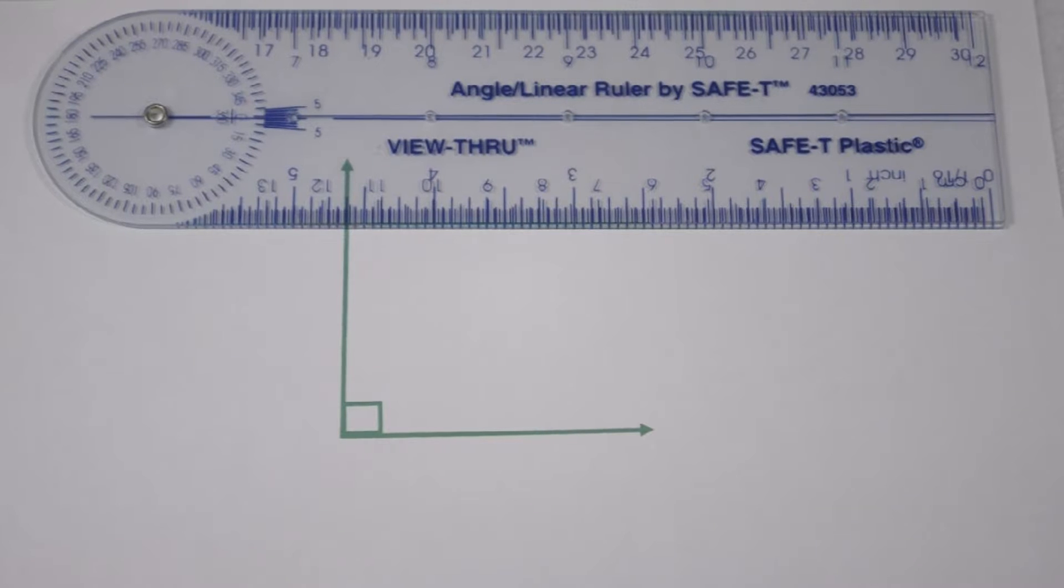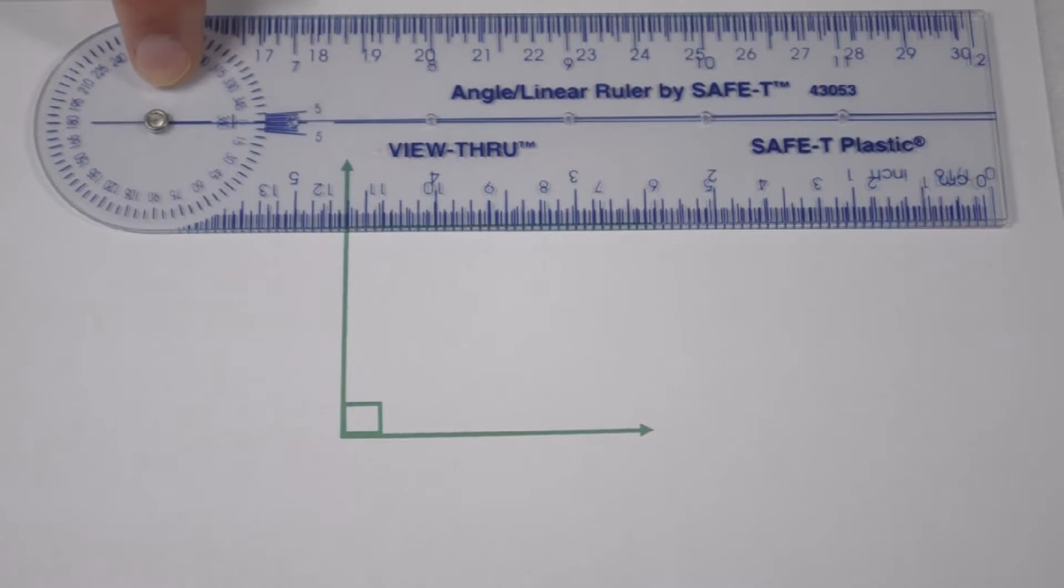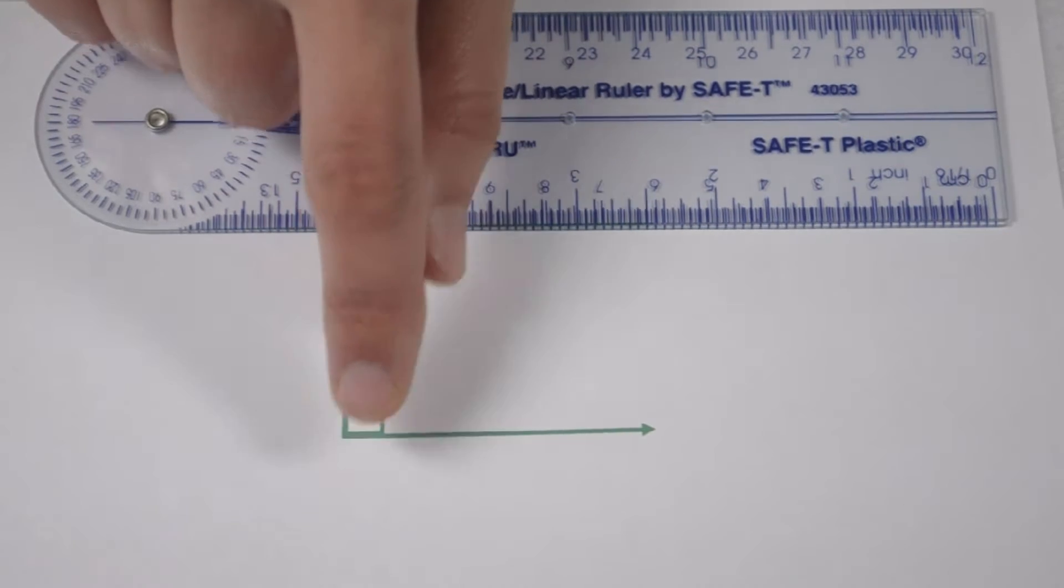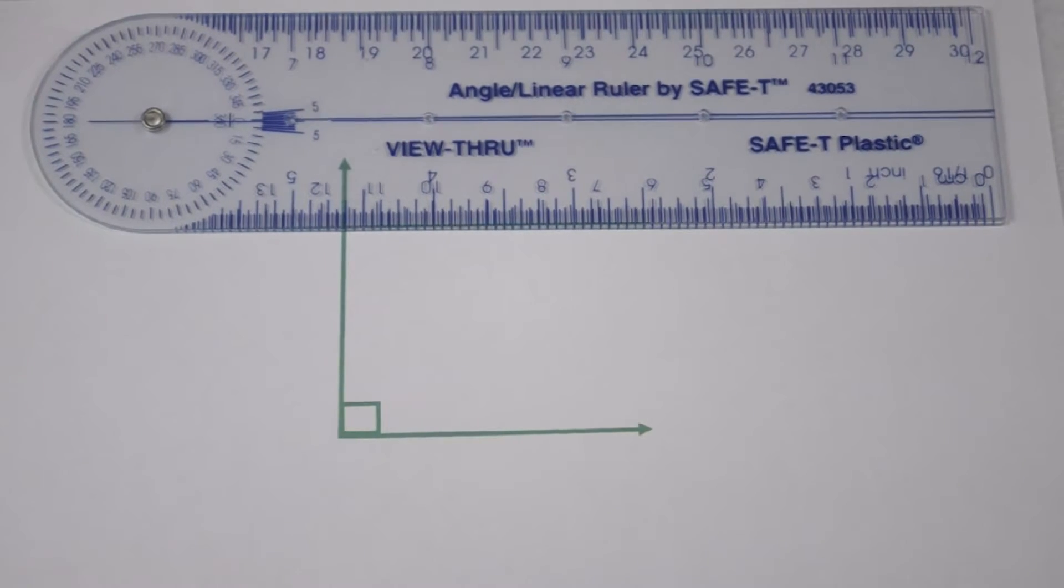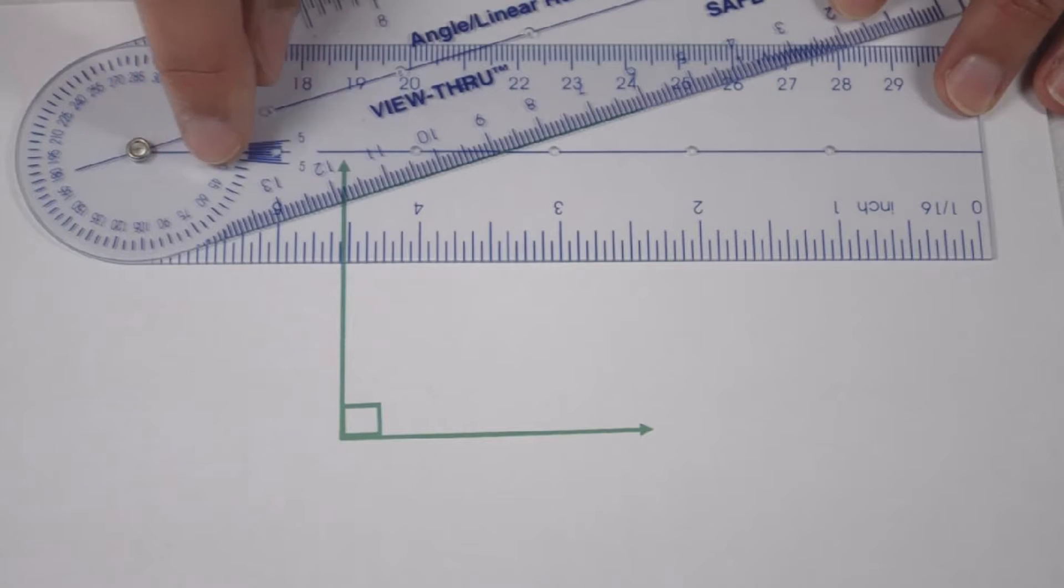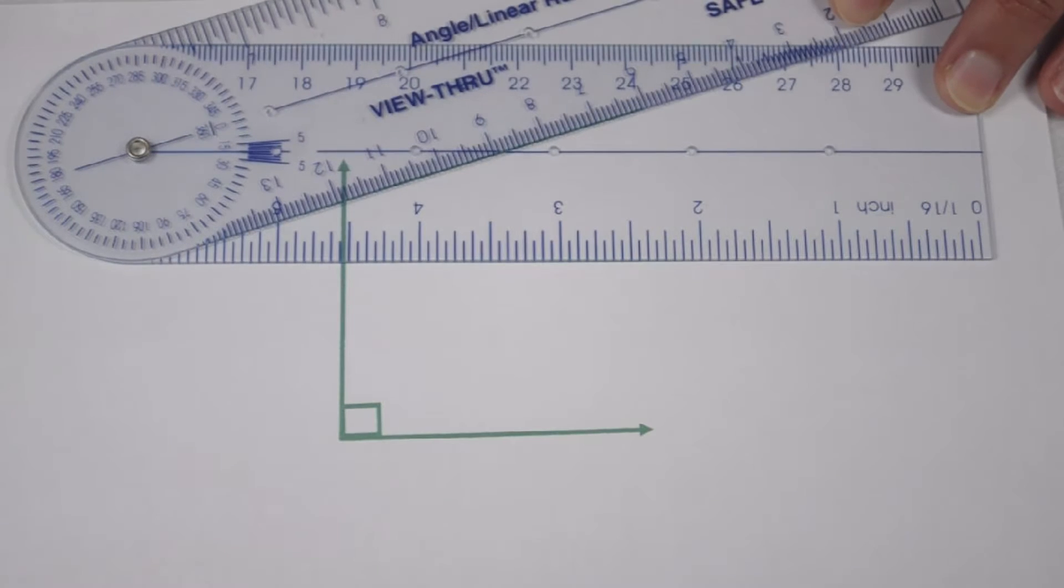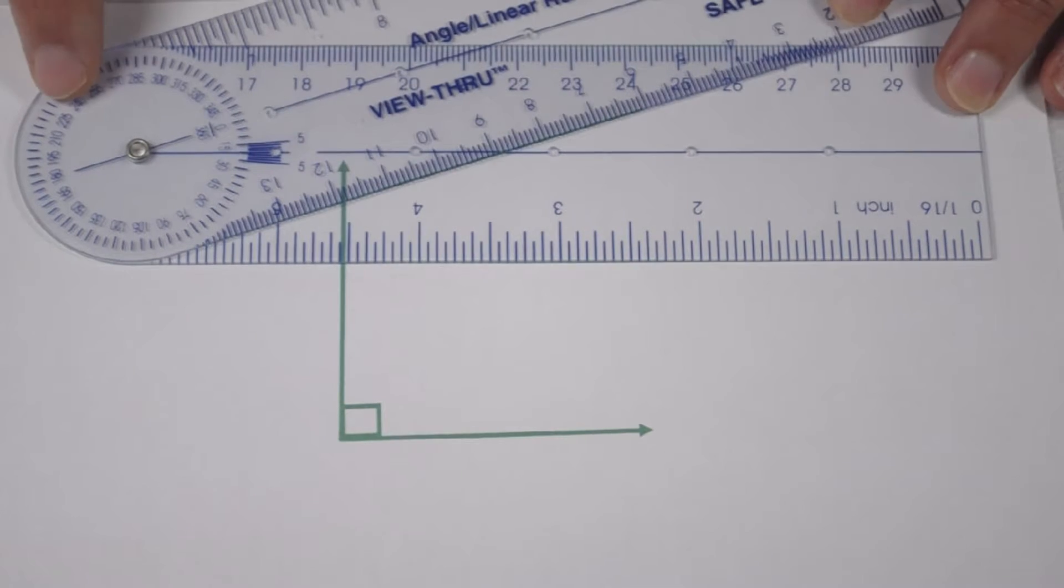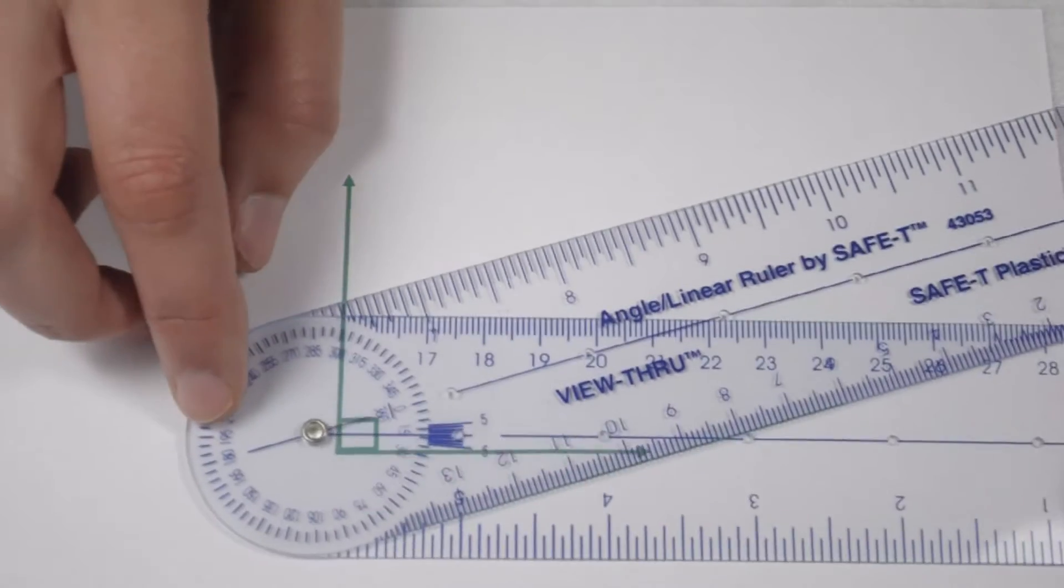In order to measure with an angle ruler, there's a rivet in the middle. This rivet needs to line up with the vertex on my angle. If I move the two legs of the angle ruler, I can see that there's a blue line going along each leg. This is where my rays are going to line up. So I'm going to line up my rivet at my vertex.